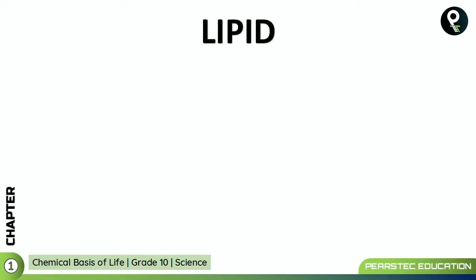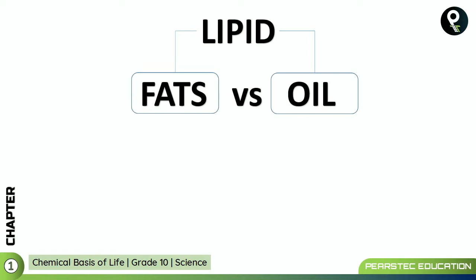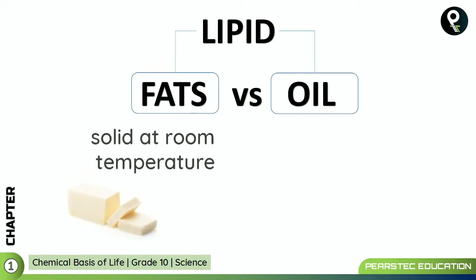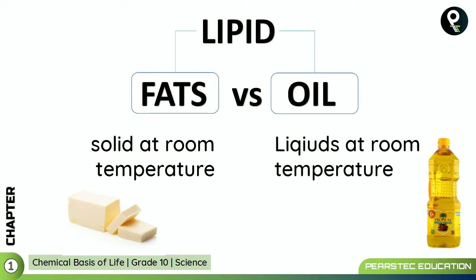Lipids — what exactly are lipids? You have seen lipids in several forms, but these are the two forms in which you find lipids: fats and oil. There is a clear difference between fats and oil. Fats are solid at room temperature, while oil is liquid at room temperature, just like the cooking oil in front of you. The butter in front of you is fats.